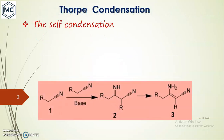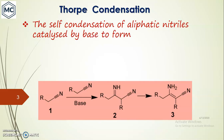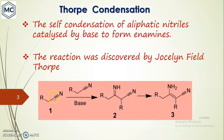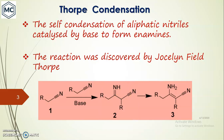Thorpe condensation is actually a self-condensation of aliphatic nitriles in the presence of bases to form imines. This reaction was discovered by the well-known scientist Jocelyne-Phil Thorpe. In this general reaction scheme, two nitriles self-condense in the presence of base to first form an imine, and this undergoes tautomerism to give an enamine.